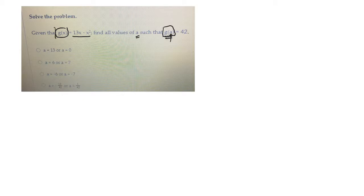So what I need to do with this expression, let me just write it over here again, g of x equals 13x minus x squared. So they're saying anywhere I see an x, plug in an a. So g of a equals 13a minus a squared, but then they say this g of a is 42. So wherever I see that, I can just plug in a 42.